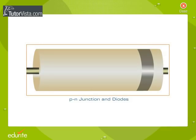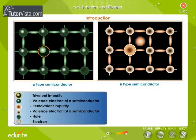P-N Junction and Diodes. To increase the practical utility of a P or N-type semiconductor, a P-N junction is created in the semiconductor crystal.